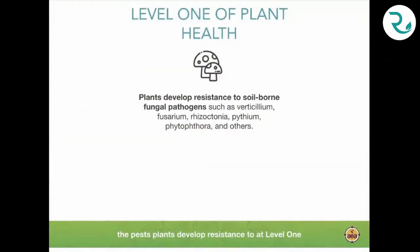At level one, when we have increased quantity and quality of photosynthesis, plants develop resistance to all soil-borne fungal pathogens such as Verticillium, Fusarium, Rhizoctonia, Pythium, and so forth. Dr. James White at Rutgers University described the rhizophagy process and the impact of Pseudomonas species on disease suppression. My understanding was that these various organisms were still present in healthy soil, serving as saprophytes and decomposers.